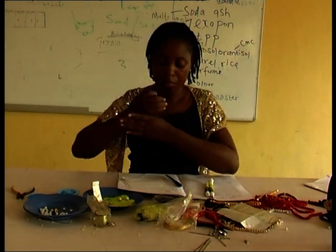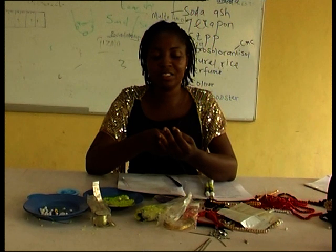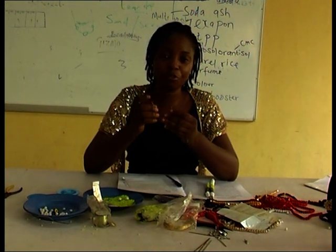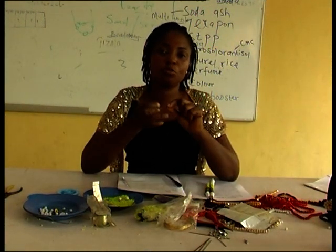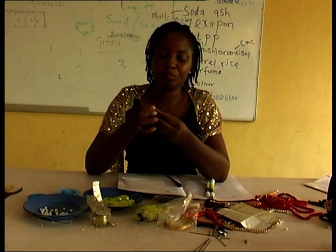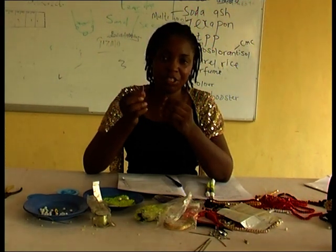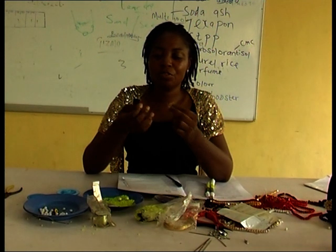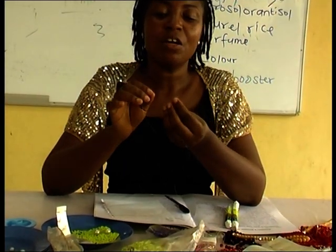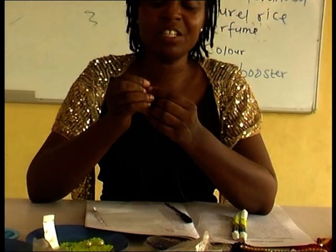Now, this is my monofilament. You cut your monofilament to a desired length — in such a way that you will be able to control it. It must not be too long nor too short; it must be what you can control. You are going to flatten the tip of your monofilament. Why do we flatten the tip? We flatten the tip of the monofilament in order for it to enter freely into the eye of the needle.